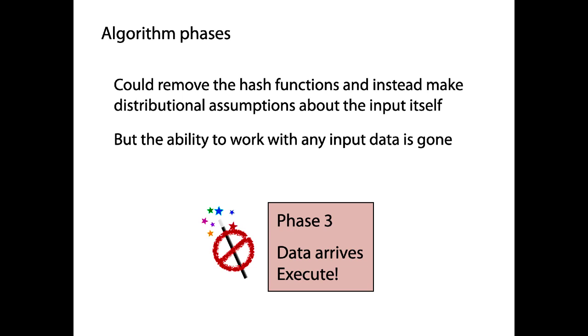So, the ability to work with any kind of input data and still rely on having uniformity and independence, we lose that if we lose the hash functions. Or, in other words, the hash functions are this kind of universal adapter that goes from arbitrary input data to a situation where we can make assumptions about how the data is distributed over, let's say, the buckets of a hash table or the bits of a bloom filter or something else.